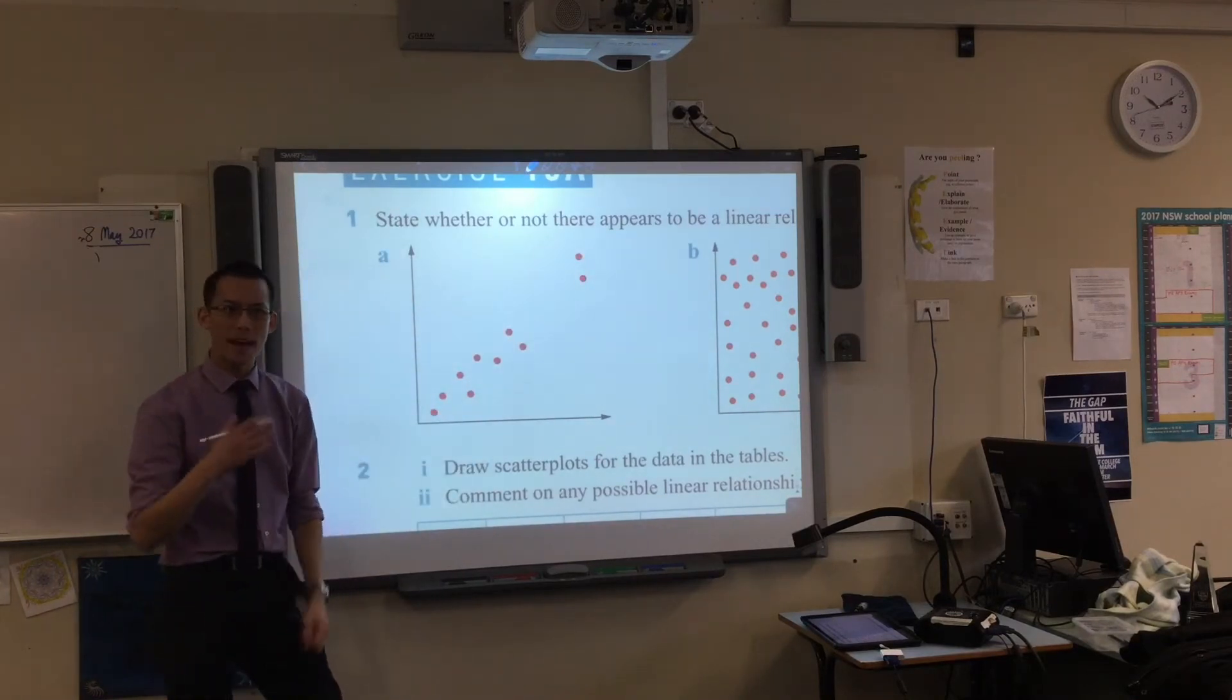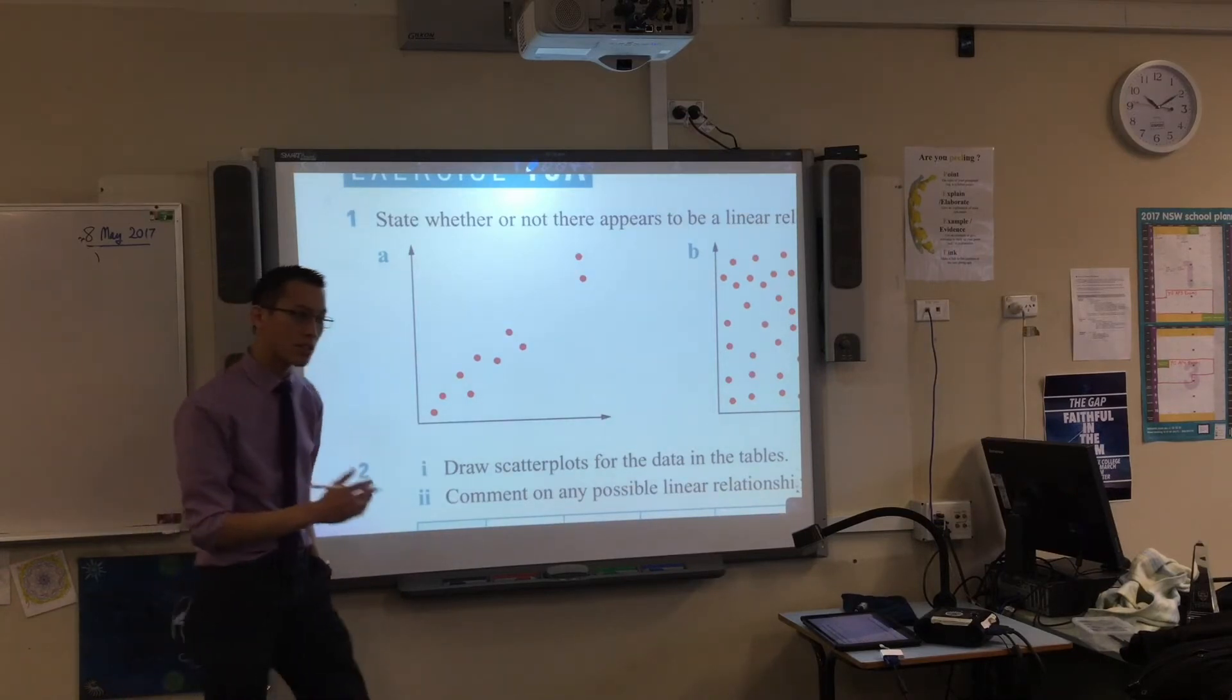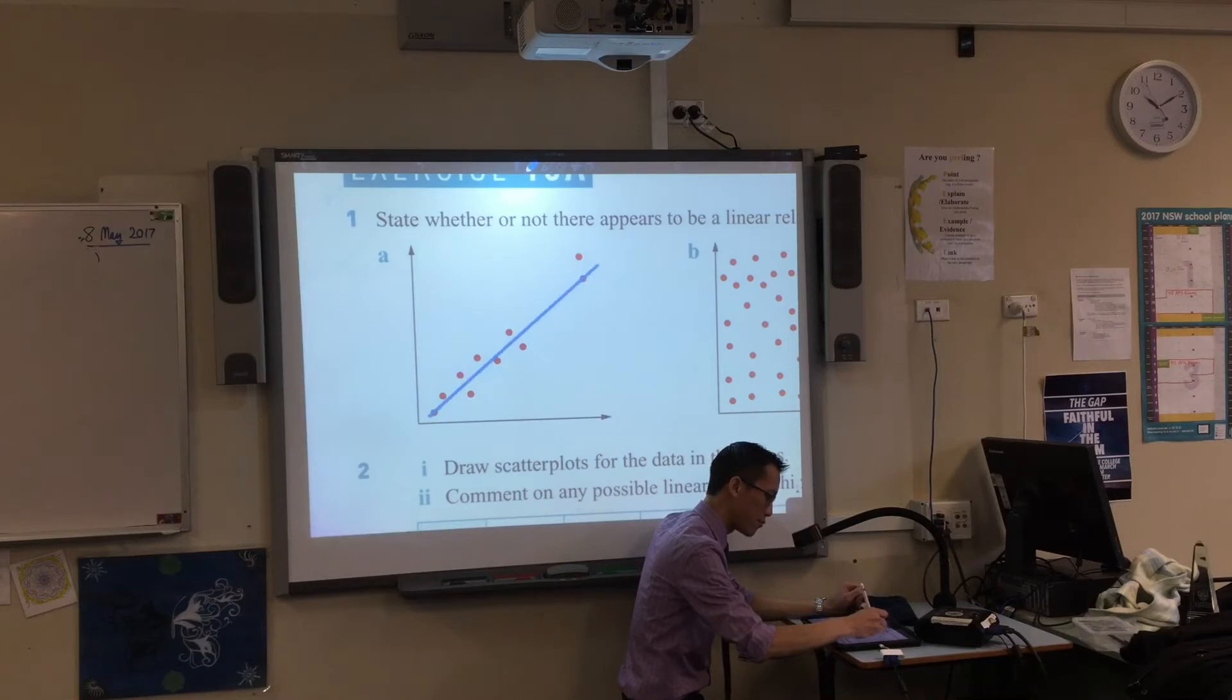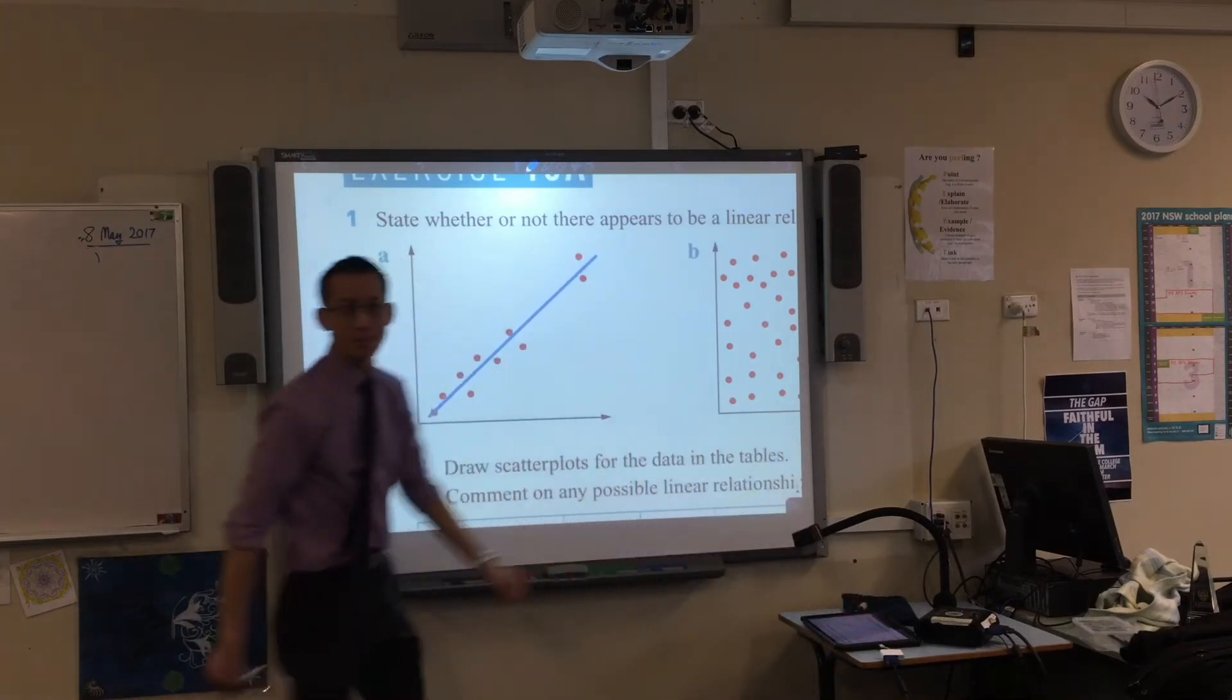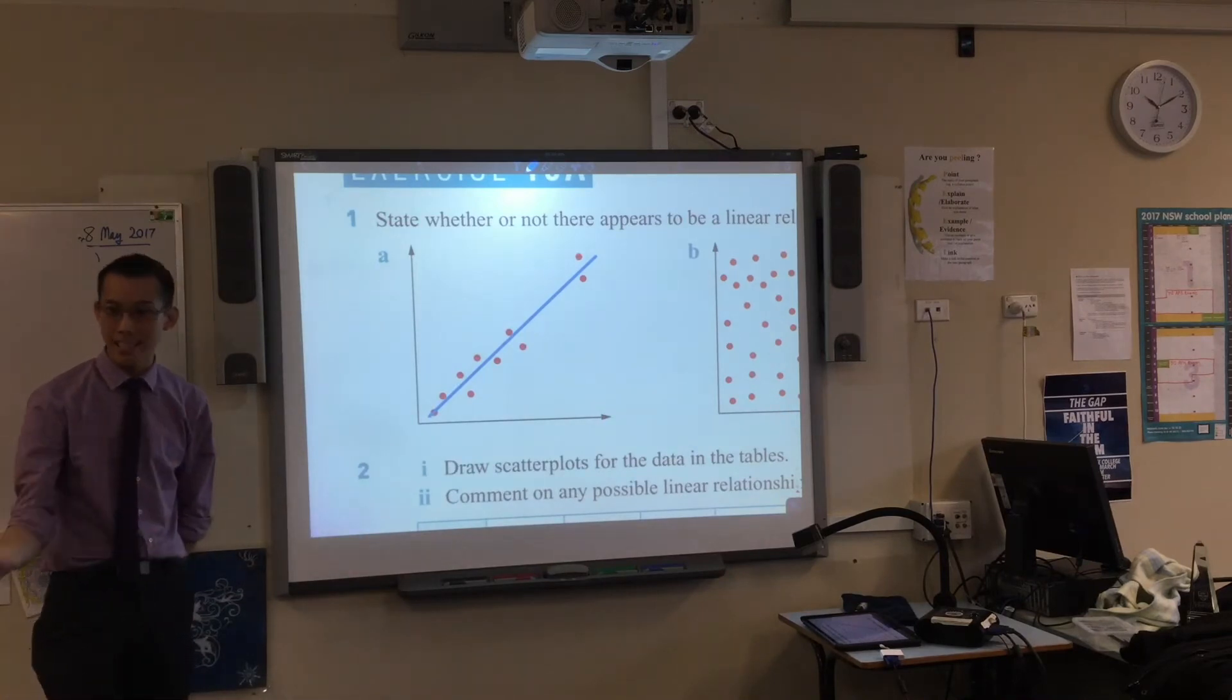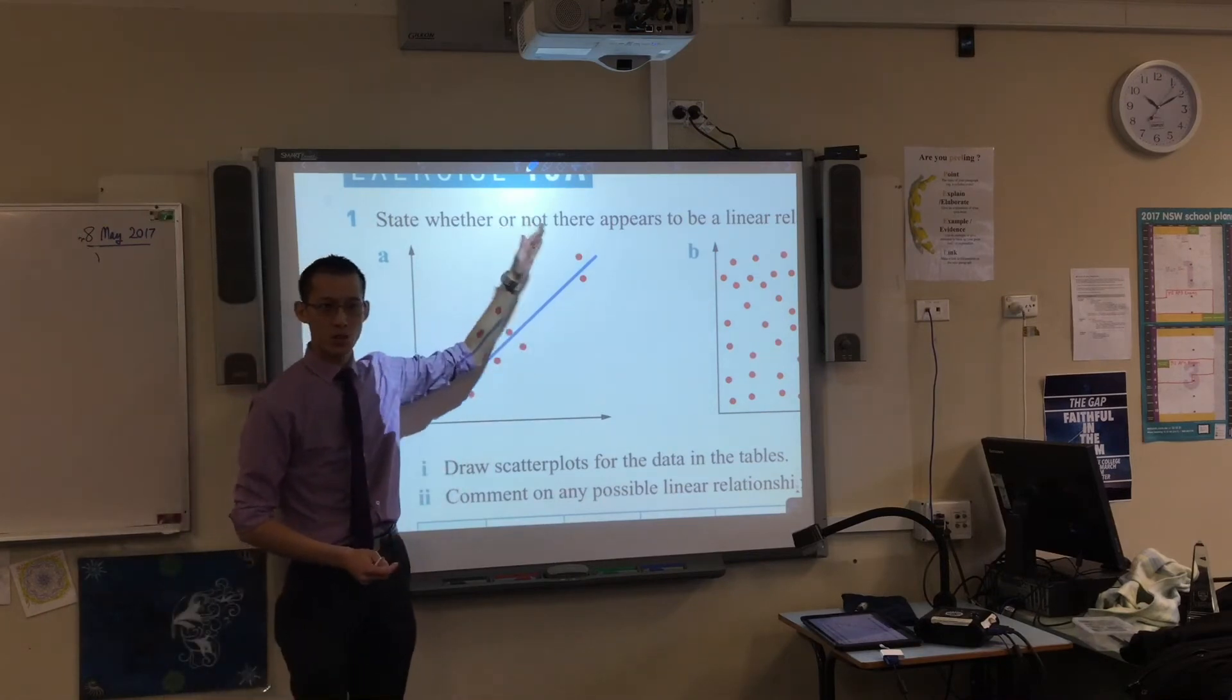So we're going to talk about the technical way of doing this a bit later on, but right now all you need to do is an approximate, literally, line that goes straight through your data. So being that the relationships that we're looking for here are linear, your line of best fit is going to be a straight line.